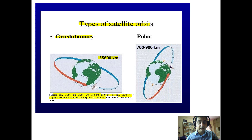For example, if India has a geostationary satellite, it will focus its orientation towards India and keep rotating along with the earth's rotation, always remaining focused on the Indian subcontinent and providing the required information. We also have polar orbiting satellites, which are mostly Earth observation satellites placed at an altitude of 700 to 900 kilometers above the surface.